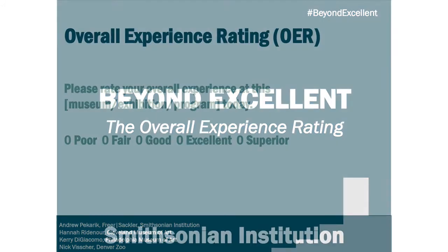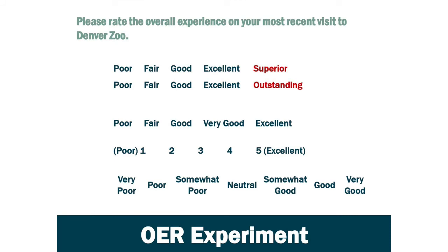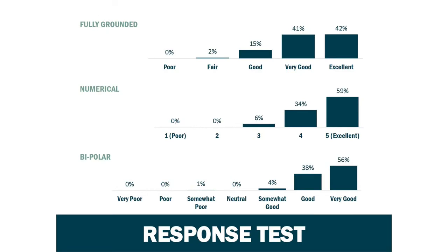The overall experience rating is phrased as: 'Please rate your overall experience at this museum, exhibit, or program,' with answers in order from least to greatest: poor, fair, good, excellent, superior. They also conducted an experiment comparing the OER to other traditional scales, including a fully grounded scale, a numerical scale, and a bipolar scale. They gave out surveys that were entirely the same except for the scale, in order to make comparisons. As you can see, the traditional scales tend to show signs of the ceiling effect — most responses fall into the category at the far end of the scale.